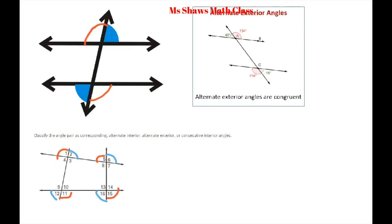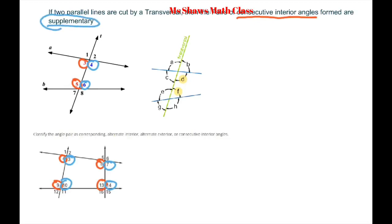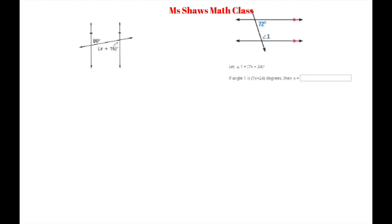Now we're talking about consecutive interior angles. They are consecutive and on the interior, just like the name says. In our case the pairs are: 4 and 9, 8 and 13, 3 and 10, and 7 and 14. The main thing about these is they aren't congruent — the angles formed are supplementary.